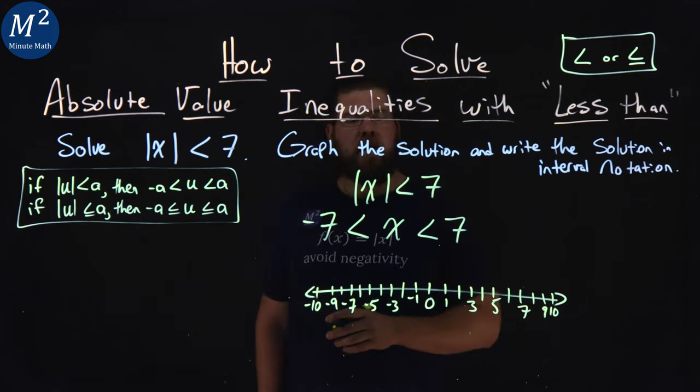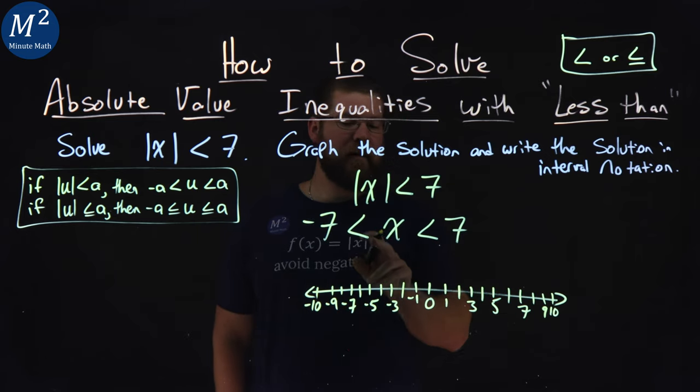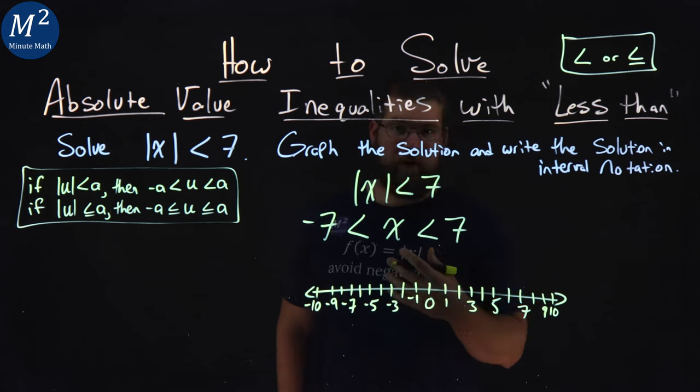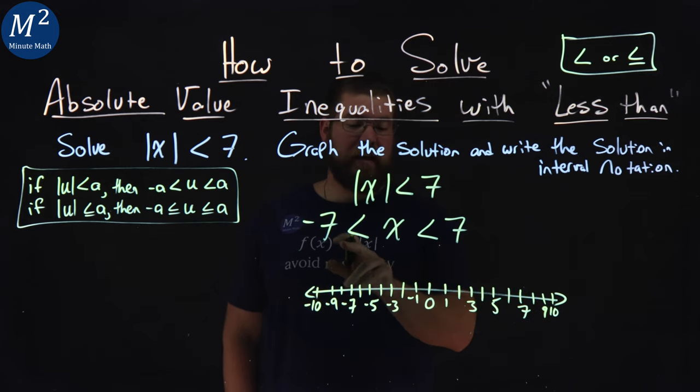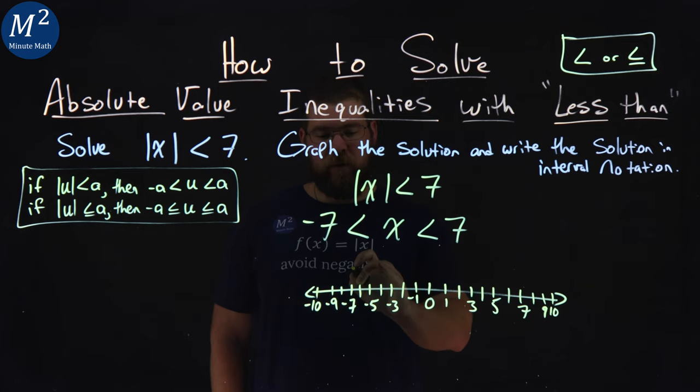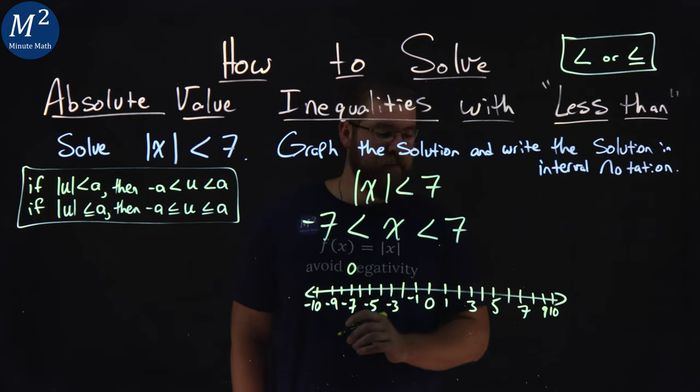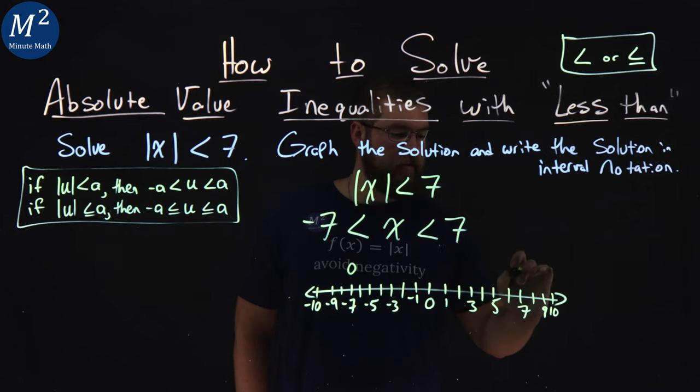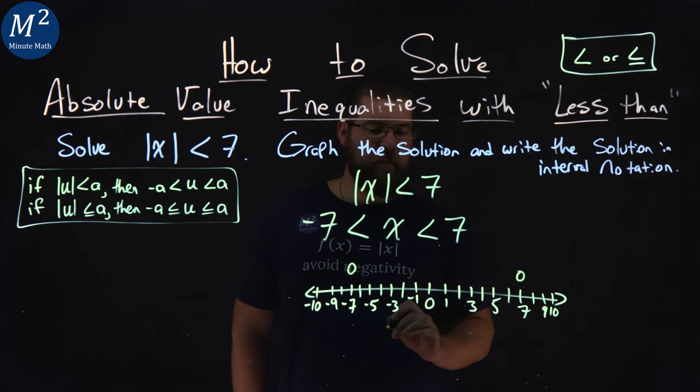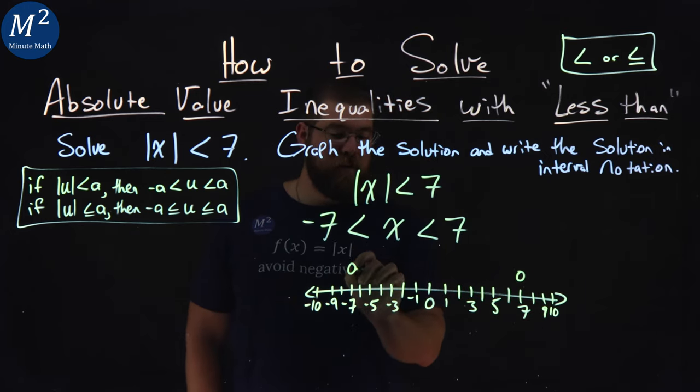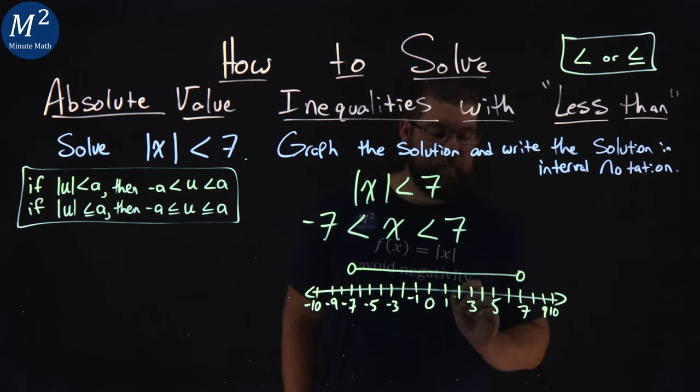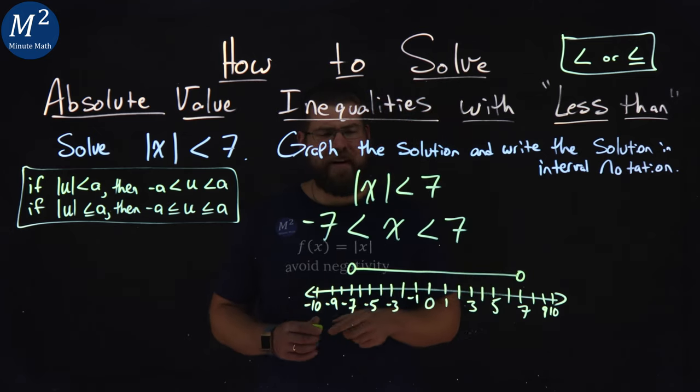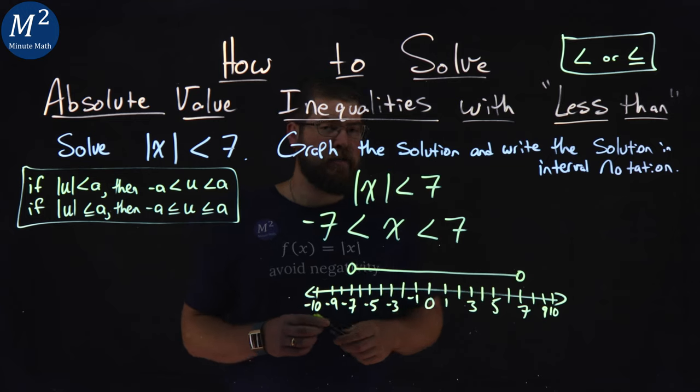Anyway, our less than sign here says we cannot equal the value, but we can get every value in between negative 7 and positive 7. So, negative 7 is less than x. We put an open circle here at negative 7. And a positive 7, same thing, open circle. From there, we connect the two with our number line. Or not a number line, just a line. And now we've graphed our answer here.